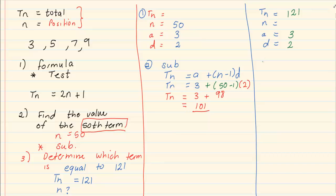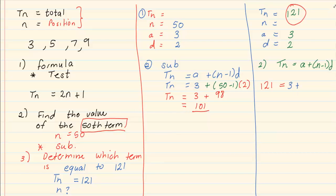Now we go to our formula and we substitute into our standard formula: TN is equal to A plus N minus 1 times D. What do we have? We have that TN is equal to 121. So we are going to have 121 is equal to, our A is 3, plus we don't have N minus 1 but we have D, D is 2.